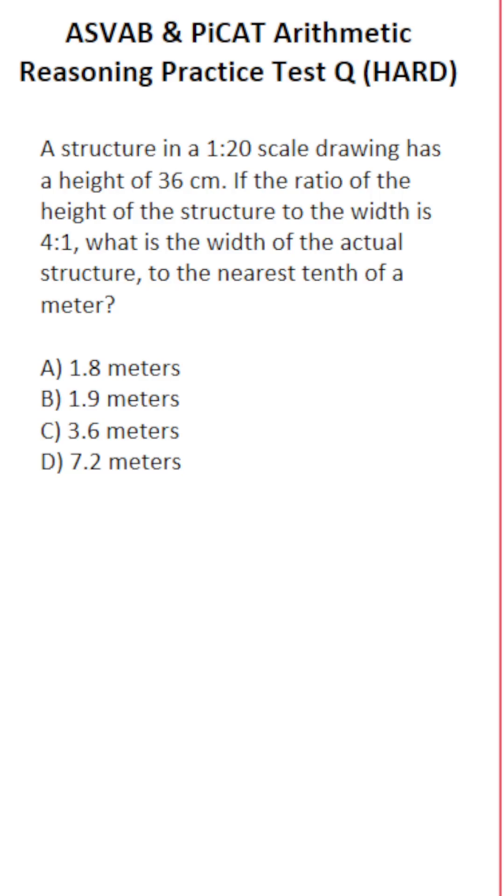This arithmetic reasoning practice test question for the ASVAB and PICAT says a structure in a 1 to 20 scale drawing has a height of 36 centimeters. If the ratio of the height of the structure to the width of the structure is 4 to 1, what is the width of the actual structure to the nearest tenth of a meter?